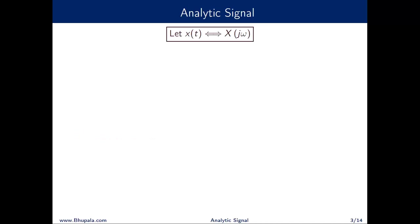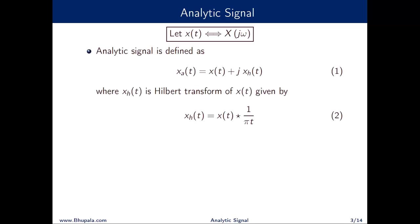Let us start by assuming that x(t) and X(jω) form the Fourier transform pair. For this signal x(t), the analytic signal is defined as x(t) plus j times x_h(t), where x_h(t) is the Hilbert transform of x(t), given by the convolution of x(t) with 1/πt. In the Fourier domain, convolution becomes multiplication, and hence the Fourier transform of x_h(t) is X(jω) multiplied by −j·sgn(ω).